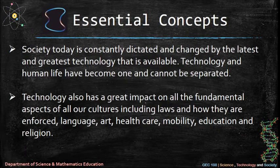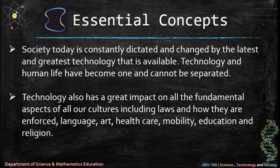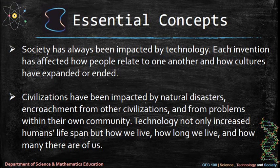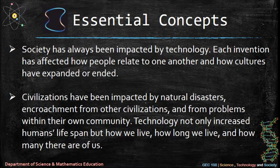Society today is constantly dictated and changed by the latest and greatest technology available. Technology and human life have become one and cannot be separated. Technology also has a great impact on all fundamental aspects of all our cultures including laws and how they are enforced, language, art, healthcare, mobility, education, and religion. Society has always been impacted by technology — each invention has affected how people relate to one another and how cultures have expanded or ended. Civilizations have been impacted by natural disasters, encroachment from other civilizations, and problems within their own community. Technology not only increased humans' lifespan but also how we live, how long we live, and how many there are of us.